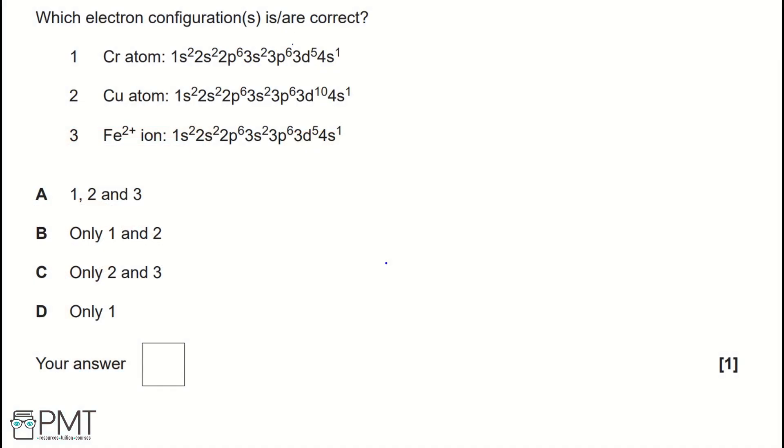Which electron configuration or configurations is or are correct? 1. Cr atom 1s2, 2s2, 2p6, 3s2, 3p6, 3d5, 4s1